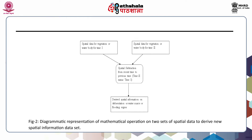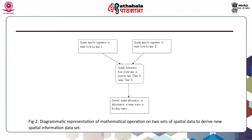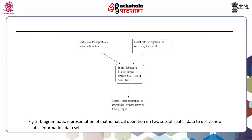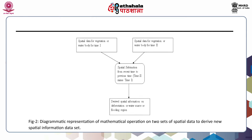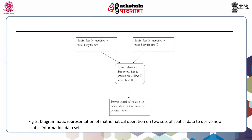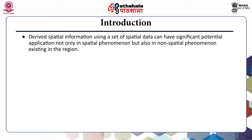For example, if you have two spatial data sets — the first for vegetation or a water body and the second also for vegetation or water body but for a different time, say time 2 — then if we perform spatial subtraction (time 2 minus time 1) the derived spatial information can give us an idea about the rate of deforestation, water scarcity or flooding. This derived spatial information can have significant potential application not only in spatial phenomena but also in non-spatial phenomena existing in the region.